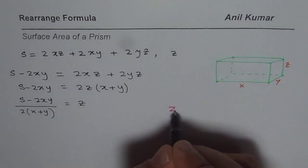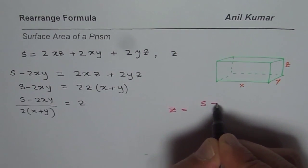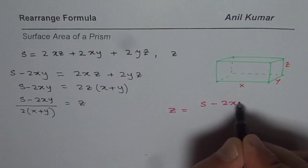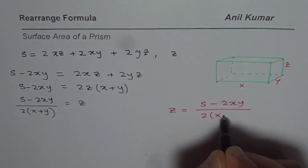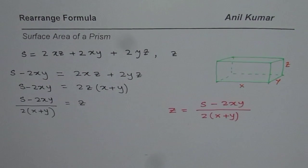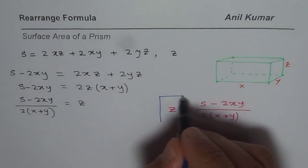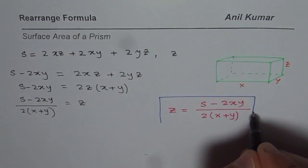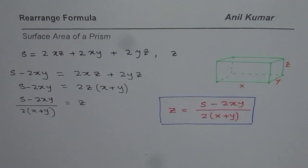Let me write this final formula: Z equals the surface area of the whole prism minus 2XY, divided by 2 times (X + Y). This series is about recalling our skills of rearranging and using formulas, and as your needs may require, it can be applied in many different applications. I hope that helps — thank you and all the best.